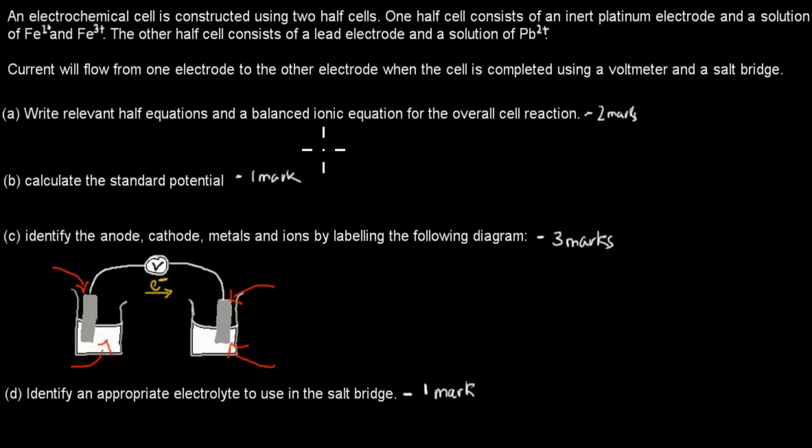All right. So I'm back. So for this question, it's a bit tricky, just because we don't use our normal two electrodes. In this case, we've got two electrodes. We have our Pb, which is our lead electrode, and our platinum electrode. Because it's inert, that means you can almost ignore it. So that's not the important part. The important part is this 2+ and 3+ iron, which is in solution. So to do the first part, write relevant half equations and a balanced ionic equation for the overall reaction. The first part we also always have to do is have to figure out which one is at the cathode, so which one gains electrons, and which one is at the anode, which one loses electrons.